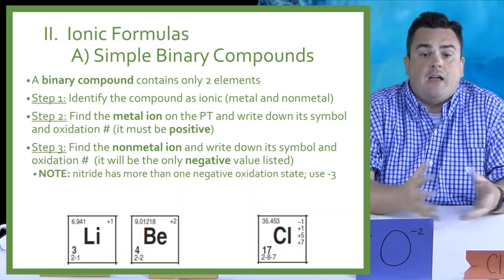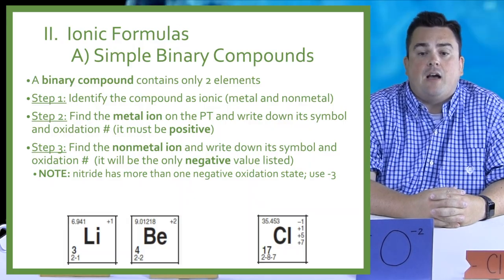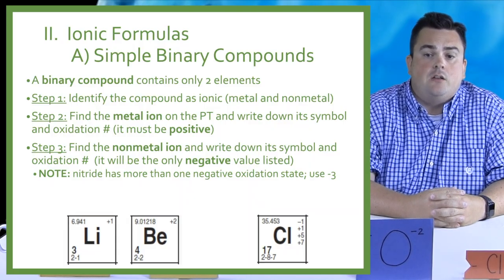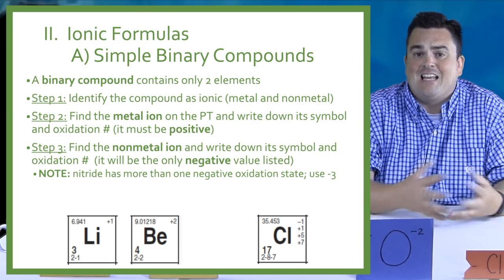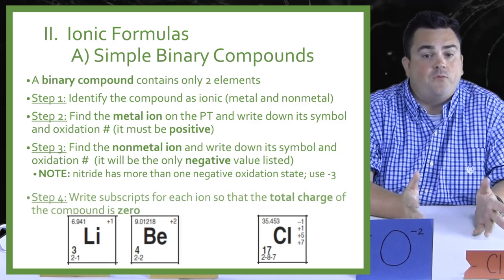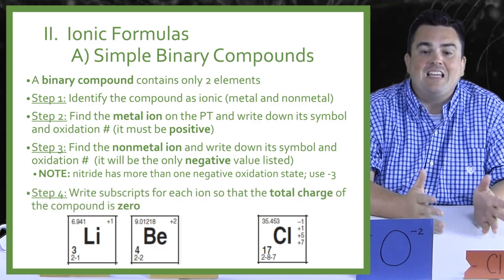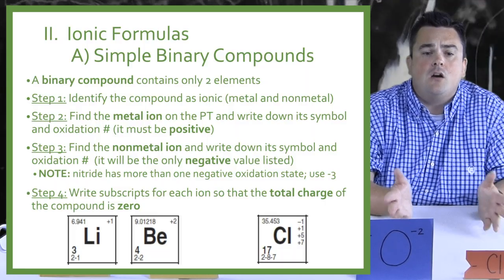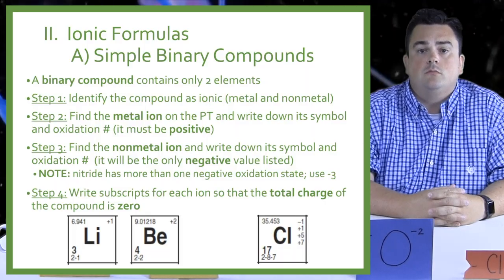Note: nitride has more than one negative oxidation state. Use negative three — it's that top one. Step four: write subscripts for each ion so that the total charge of the compound is zero.